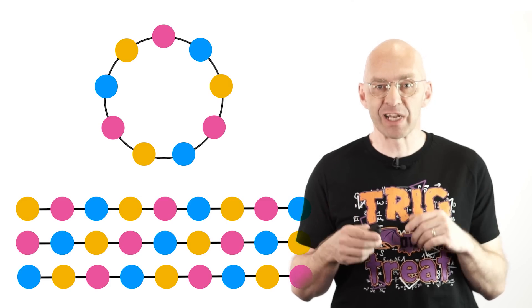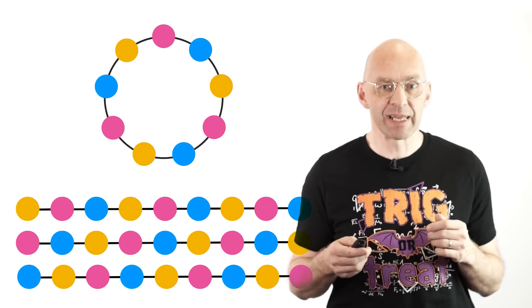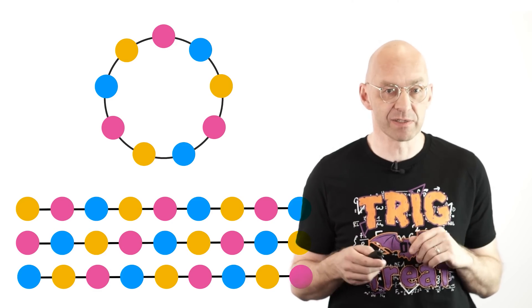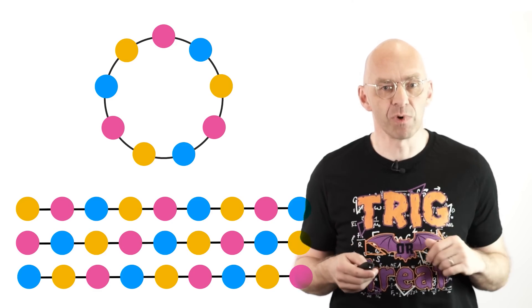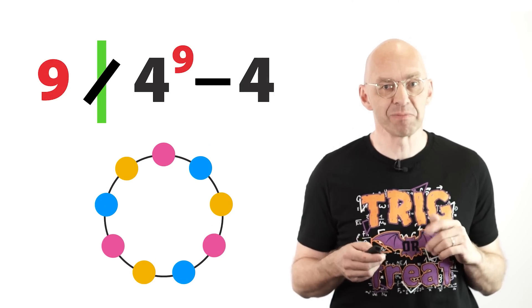And this invalidates the last step in our proof. I'll leave it as a first challenge for you to show in the comments that this sort of periodic necklace cannot occur if a necklace has a prime number of beads and at least two colors. Oh, and just in case you're wondering, 9 doesn't divide 4 to the power of 9 minus 4.